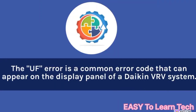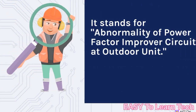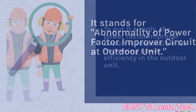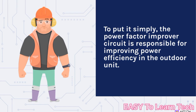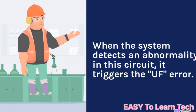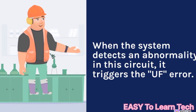The UF error is a common error code that can appear on the display panel of a Daikin VRV system. It stands for Abnormality of Power Factor Improver Circuit at Outdoor Unit. To put it simply, the Power Factor Improver Circuit is responsible for improving power efficiency in the outdoor unit. When the system detects an abnormality in this circuit, it triggers the UF error.